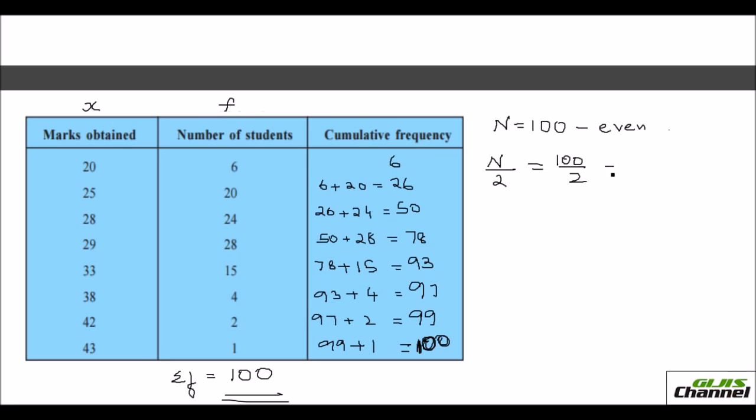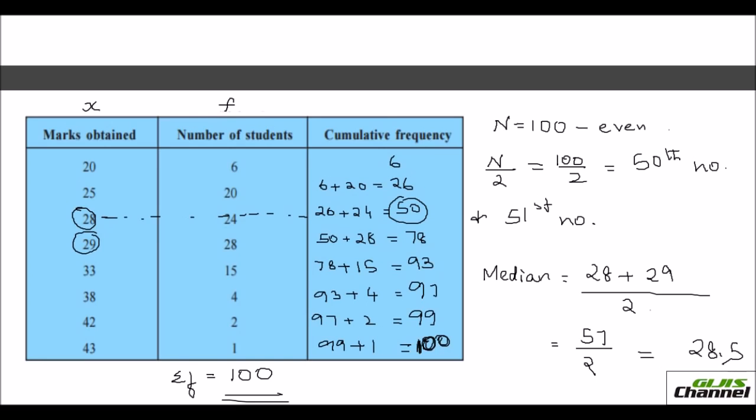We do n by 2, 100 over 2 is 50th item, and the next number you have to take, 51st number. So here you see the 50, you just look at the cumulative frequency. Your 50th number is 28. The x value is 28. And the next number, 51st number will be 29. So you take median will be the average of these two x values. Always median you take from the x value. So the median will be 28 plus 29 over 2. You are finding the average. So this will give you 57, 57 over 2, and so your median is 28.5. Isn't that easy? So this is when the x values and the frequency are given.